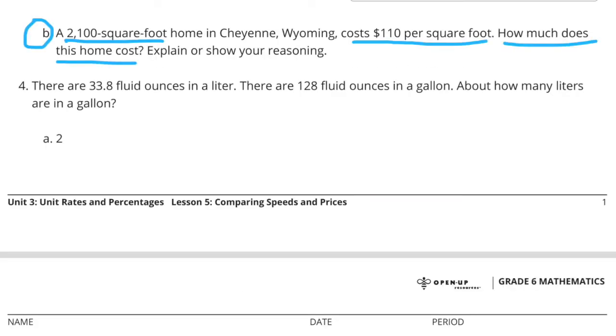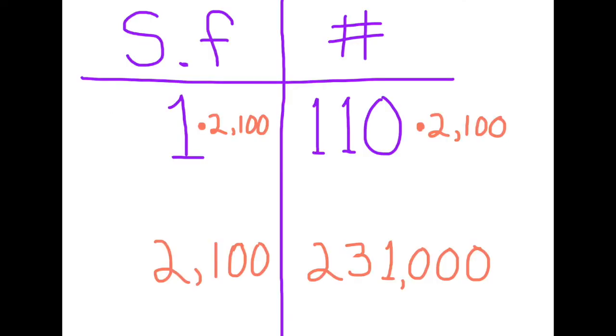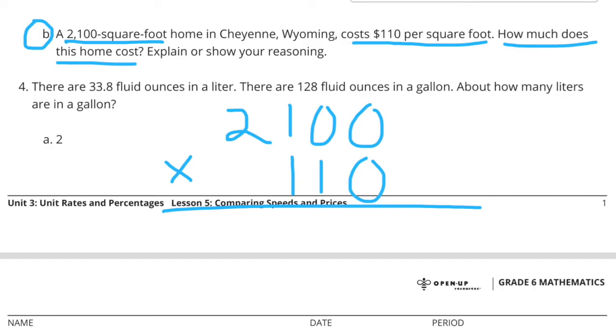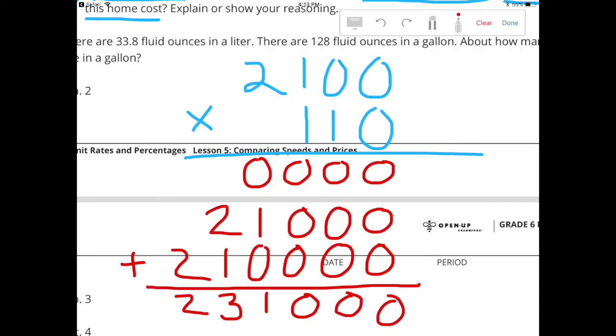B: A 2,100 square foot home in Cheyenne, Wyoming cost $110 per square foot. How much does this home cost? Explain or show your reasoning. 2,100 square foot times $110 per square foot. $2,100 times $110 is $231,000.